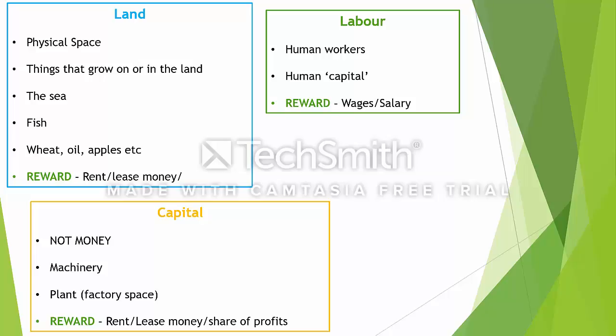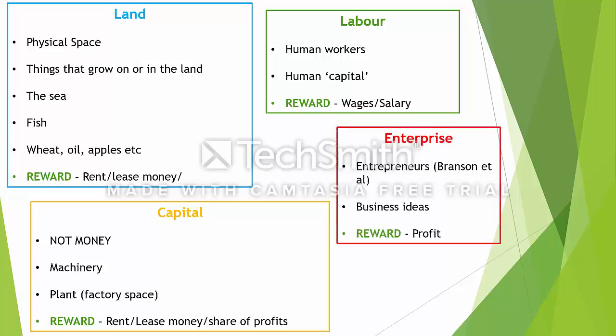The final category of factors of production is enterprise. This incorporates business ideas — inventions, innovations, ideas to generate new businesses. It also includes the entrepreneurs who have those ideas, people like Richard Branson and Alan Sugar. Entrepreneurs organise the other three factors of production to create the business and the product. The reward for being an entrepreneur is profit, though secondary rewards like satisfaction and status exist too — but in economics, we're concerned with the primary reward, which is profit.